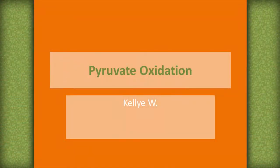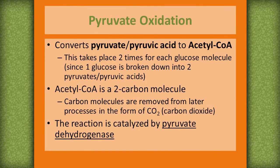Hi, my name is Kelly. I'm from the Center of Academic Achievement. We're talking about pyruvate oxidation today. Pyruvate oxidation converts pyruvate, or pyruvic acid, into acetyl CoA. This takes place two times for each glucose molecule, since one glucose molecule is broken down into two pyruvates or pyruvic acids.